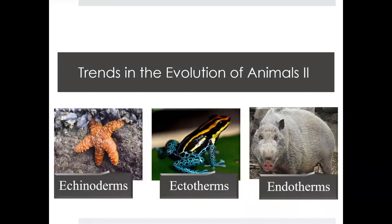Hey everybody, welcome back to another Bio 1802 lab. Today we're going to be looking at Lab 7, which is Animals 2. We're going to continue looking at some of the different animals on our planet, specifically those that are classified as deuterostomes. For those who don't know me, my name is Alan Babineau. I'm one of the 1802 instructors, and let's go ahead and get started.